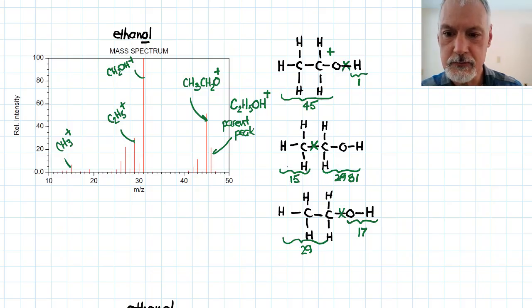So again, just to recap, the peak furthest to the right, the parent peak, gives me the molar mass of the entire species, whereas the smaller peaks give me the molar masses of fragments of that.